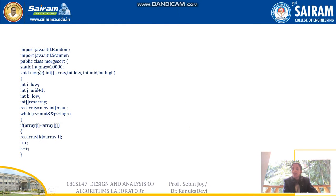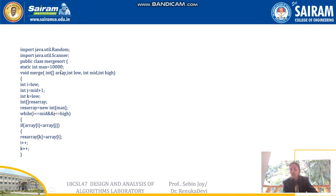We are using the Merge function here. The class name is Merge Sort with a Merge function. I am setting the values i, j, and k: i is equal to low, j is equal to mid plus 1, and k is equal to low. A result array is also declared here with the size max, where max is declared as 10,000.